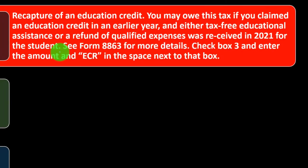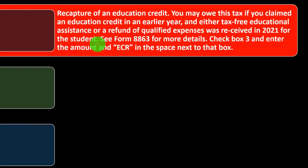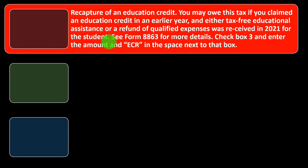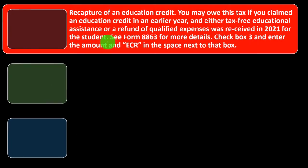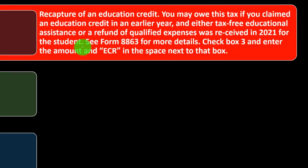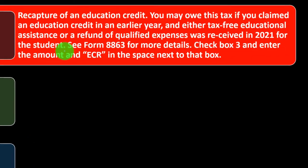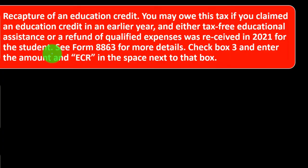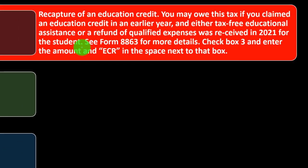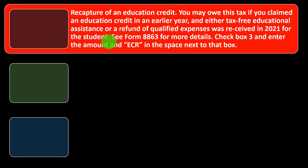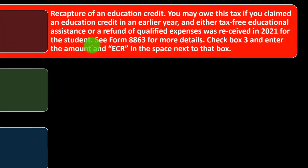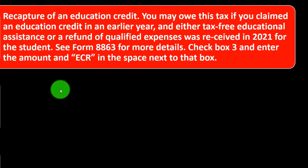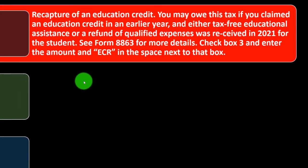So what do you do? You could go back to the prior year and amend the tax return, but that's usually the tedious approach. Most of the time it's easier to go forward and make the adjustment in the current year, which is the idea here. See Form 8863 for more details; check box three and enter the amount and 'ECR' in the space next to that box.